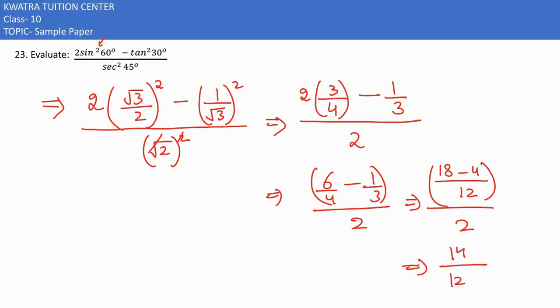14 divided by 12 is there. And this 2 would be like in multiplication with 12. So 2 and 14 cancel. You would get 7 by 12 as the answer.